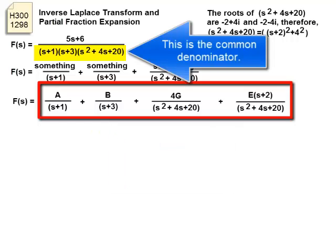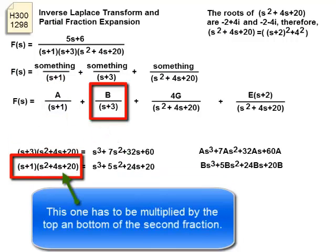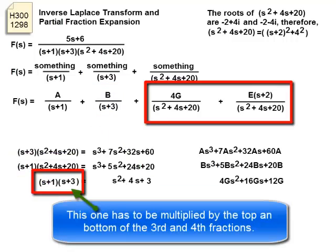This is the common denominator. This one has to be multiplied by the top and bottom of the first fraction. And this one has to be multiplied by the top and bottom of the second fraction. This one has to be multiplied by the top and bottom of the third and fourth fractions.